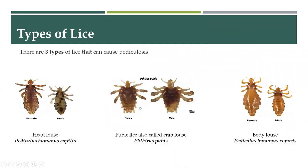We have three main types of pediculosis. We can have the head louse, which is caused by Pediculus humanus capitis, or most people just know it as Pediculus capitis. Then we have pubic lice, sometimes called crab lice, because of the features of how the appendages look. This is caused by Phthirus pubis. Then we have the body louse, which is caused by Pediculus humanus corporis, or basically Pediculus corporis.